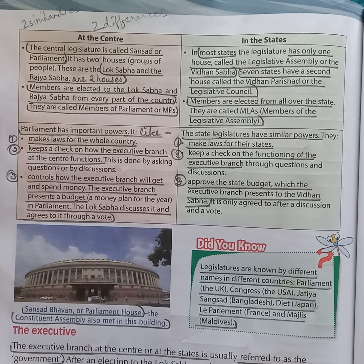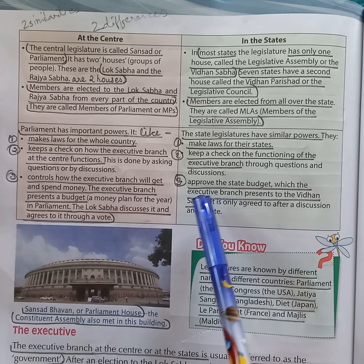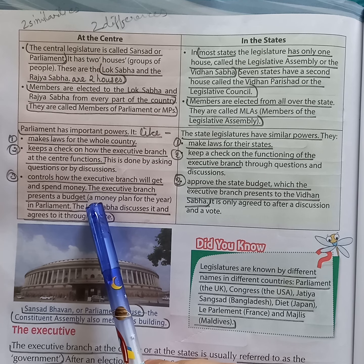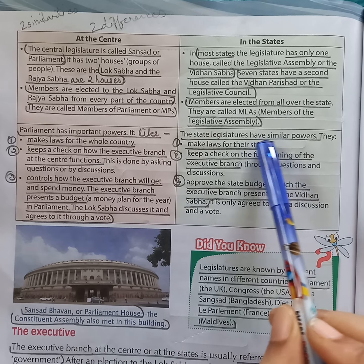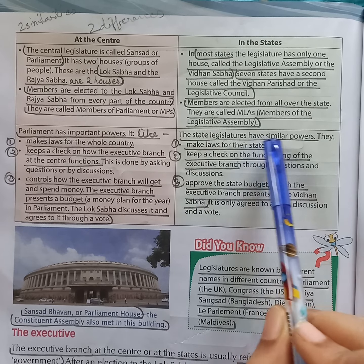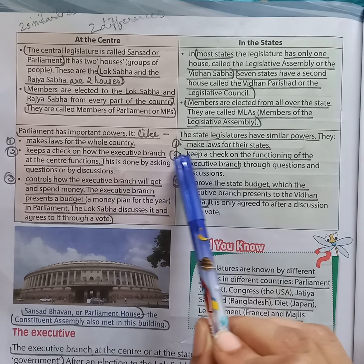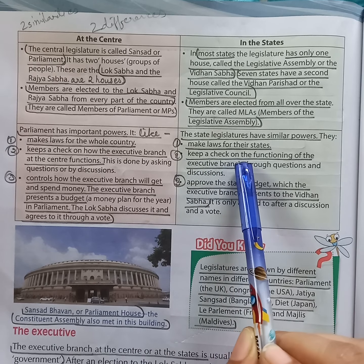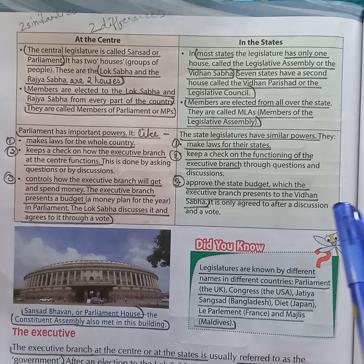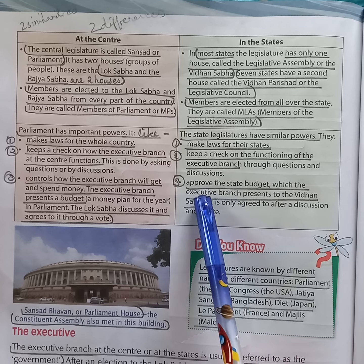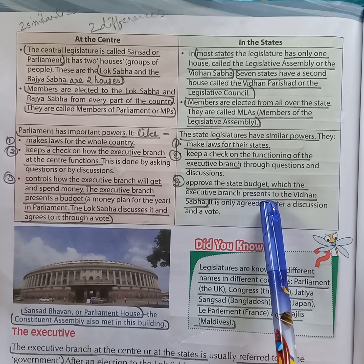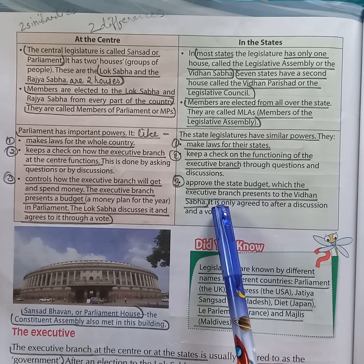What are the powers of the state legislatures? Answer: the powers of state legislatures are similar to those of the Parliament. First, they make laws for the states. Second, they keep a check on the functioning of the Executive Branch. Third, they approve the state budget which the Executive Branch presents to the Vidhan Sabha after a voting.